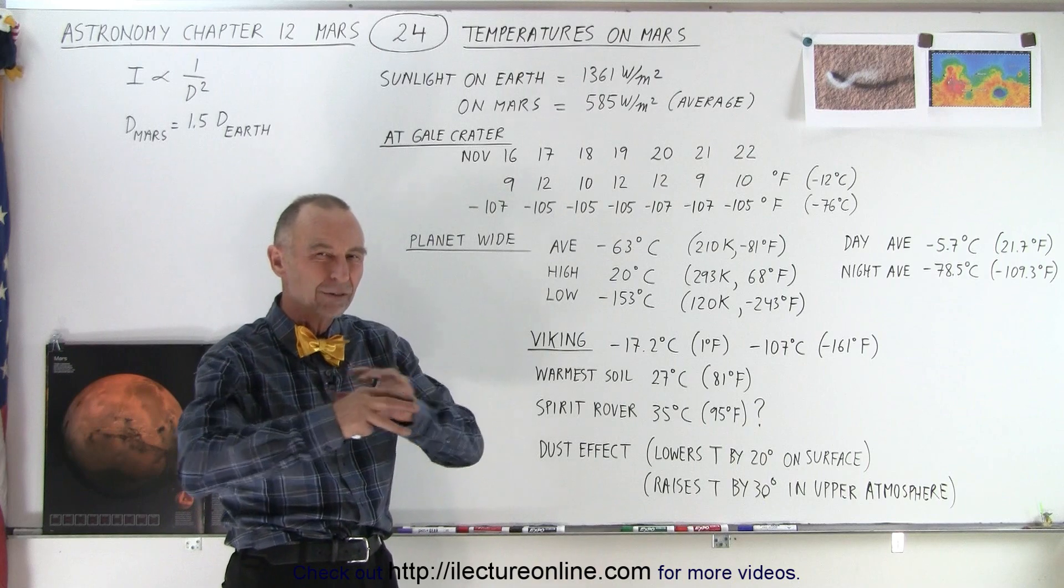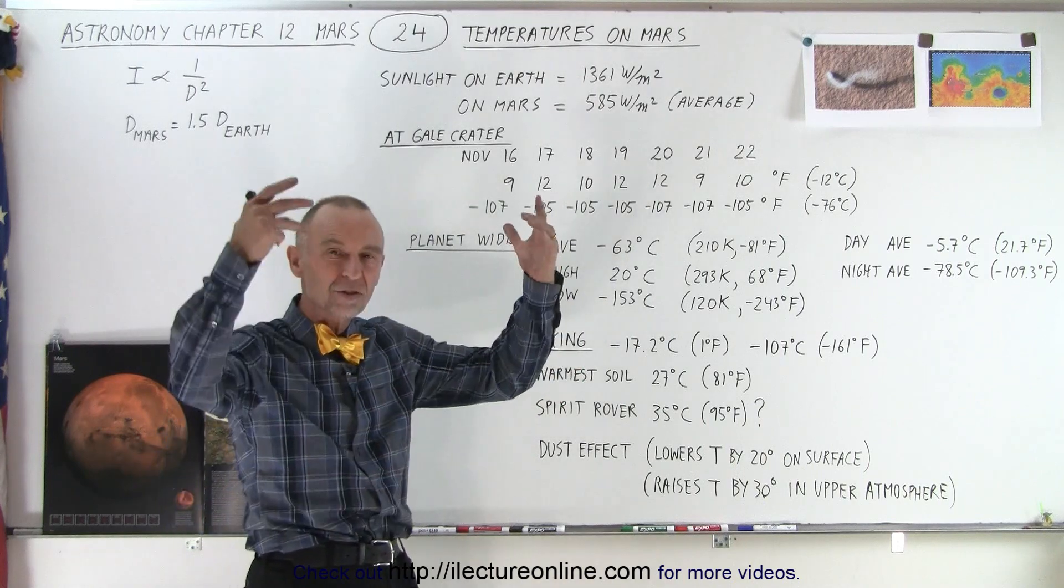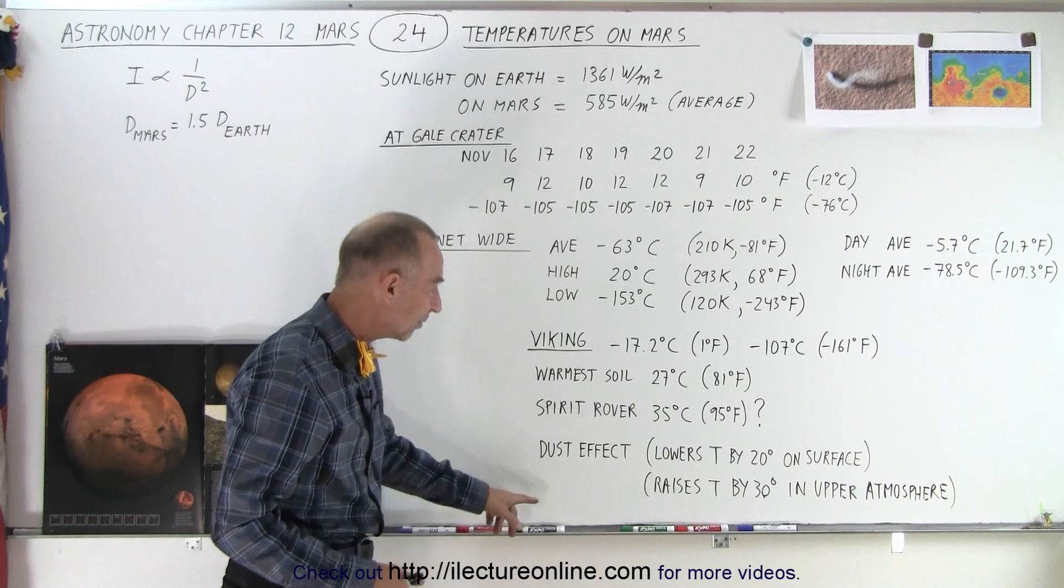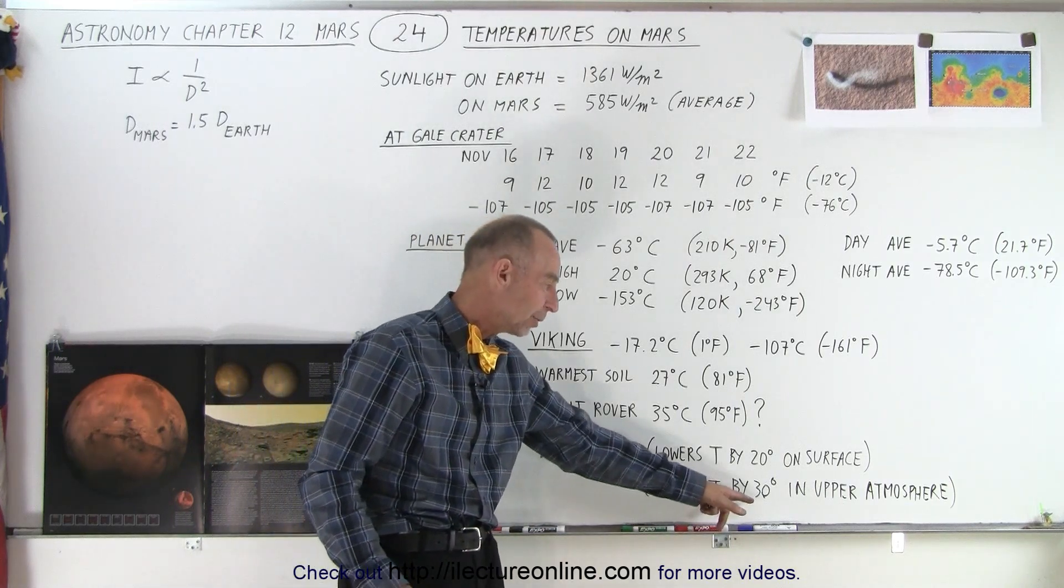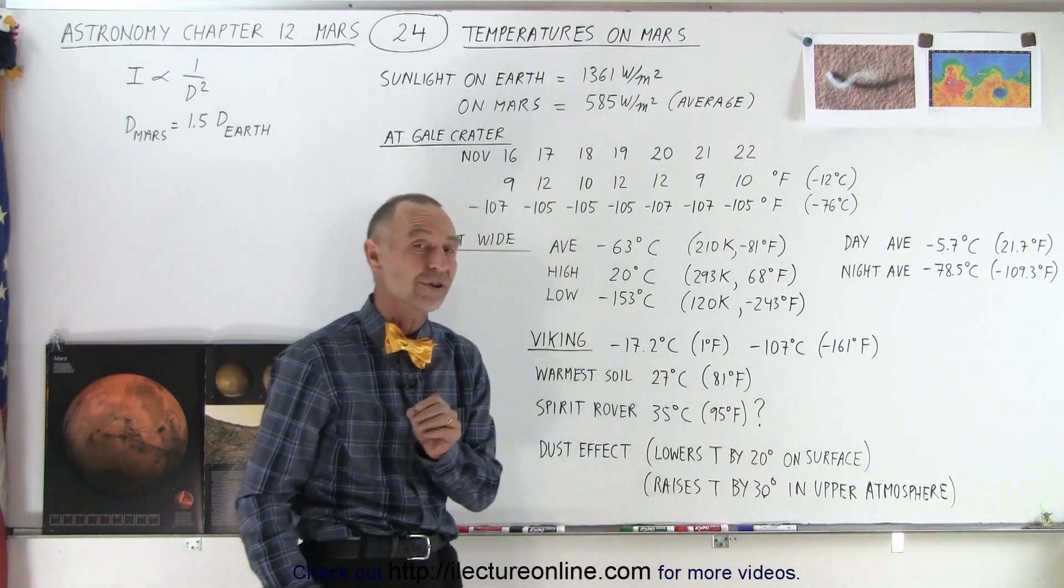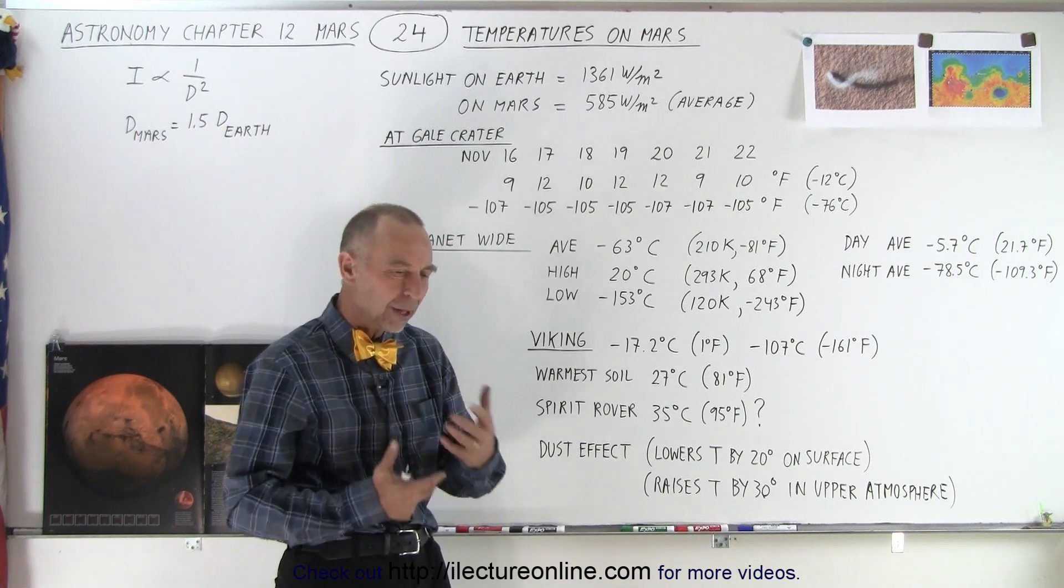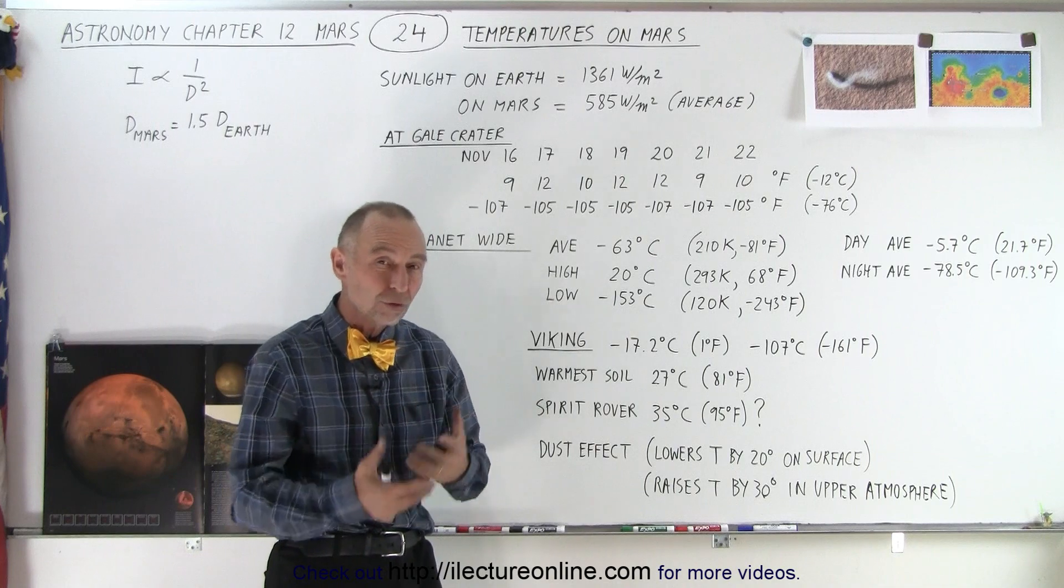So a big drop in temperature when it gets very dusty—temperatures drop because the sunshine simply can't get through to warm up the surface. On the other hand, it raises the temperature by about 30 degrees in the upper atmosphere. You would think that when the temperatures go up in the upper atmosphere, you have more turbulence in the atmosphere, more convection currents moving around.